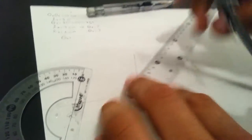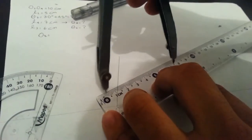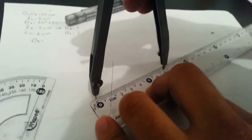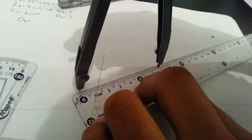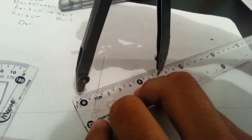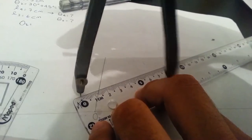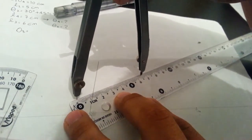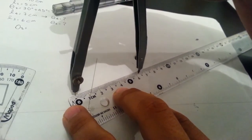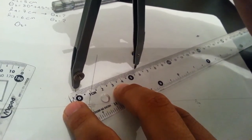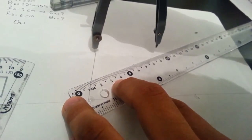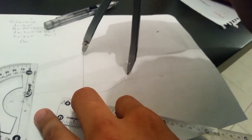After, you have to take your compass and open it 6 cm for link 3. You have to put it here and do a circle.